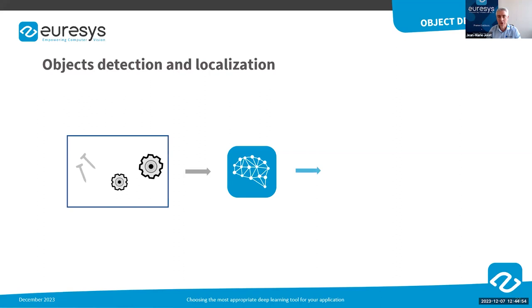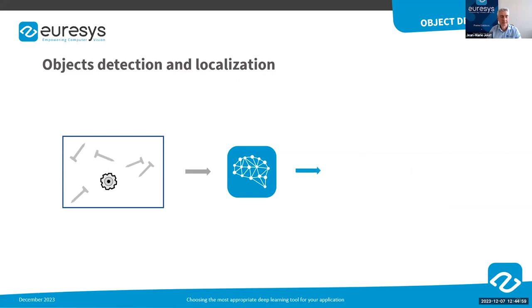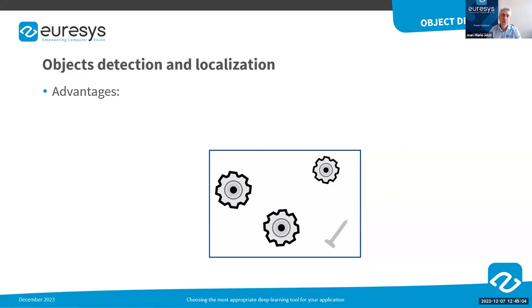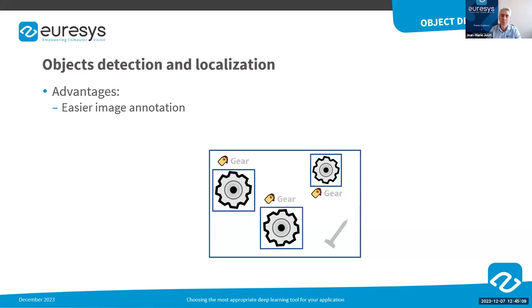The object detector is able to distinguish overlapping objects and as such is suitable for counting them. Compared to a supervised segmenter, the annotation of the dataset to train the neural network for object detection is much easier — it just requires placing a bounding box around the object or clicking its center. For reliable identification, at least 100 instances of each object should be provided. An object detector is faster than a supervised segmenter — typically two times faster.